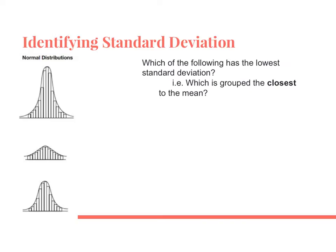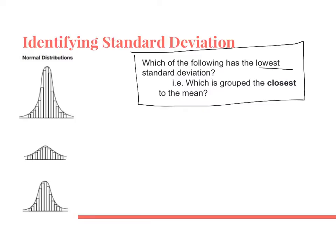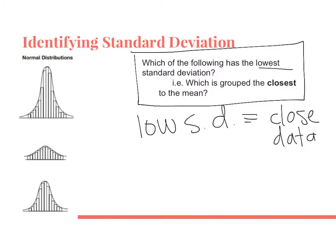Let's do an example. We're going to look at which of the following has the lowest standard deviation. Remember, low standard deviation means that the data is really close together — everything is really close to the middle of the graph. If these are all normal distributions, the means are all right in the middle. Take your best guess at which is grouped closest to the mean: number one, number two, or number three?